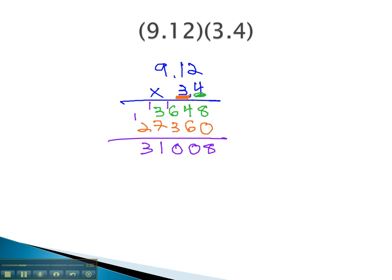And then we have to decide where to place the decimal. The way we decide where to place the decimal is we will count the decimal digits in our problem. 1, 2, 3.